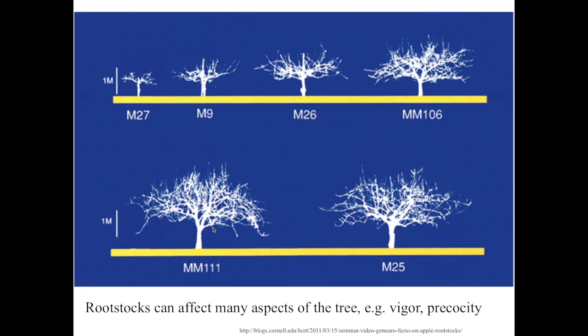When choosing a variety and tree to plant, a grower has to take into account not only the scion but also the rootstock, which can impart other traits — resistances to diseases or pests, and also effects on how soon the tree starts to produce bloom and fruit, which is precocity. The more dwarfing rootstocks typically produce trees that fruit sooner. There's a link on screen to a seminar by Gennaro Fazio, the USDA apple rootstock breeder, for anyone wanting to learn more.